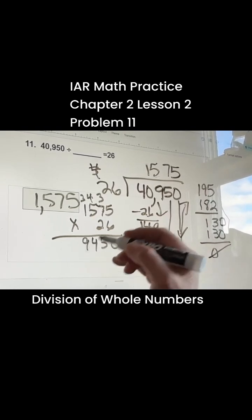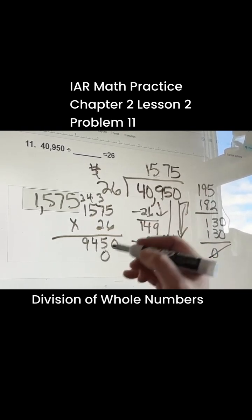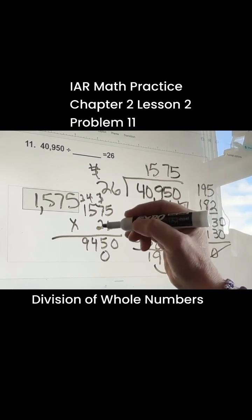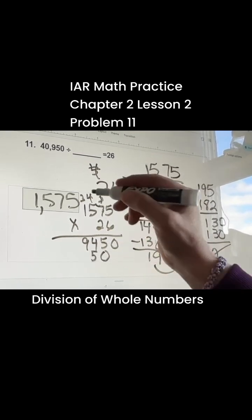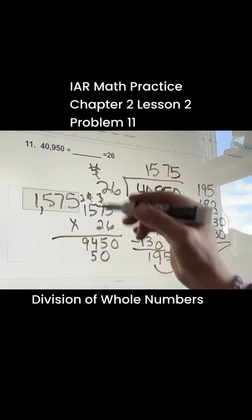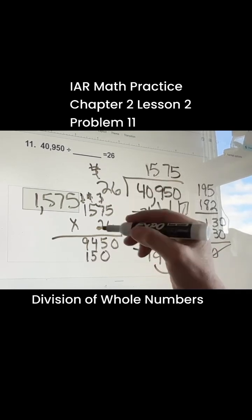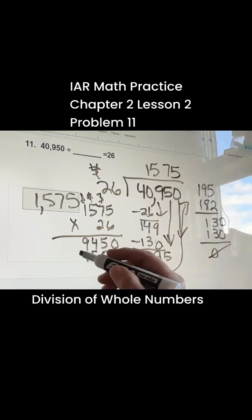2 times 5 is 10, 2 times 7 is 14, plus 1 is 15, 2 times 5 is 10, plus 1 is 11, and 2 times 1 is 2, plus 1 is 3.